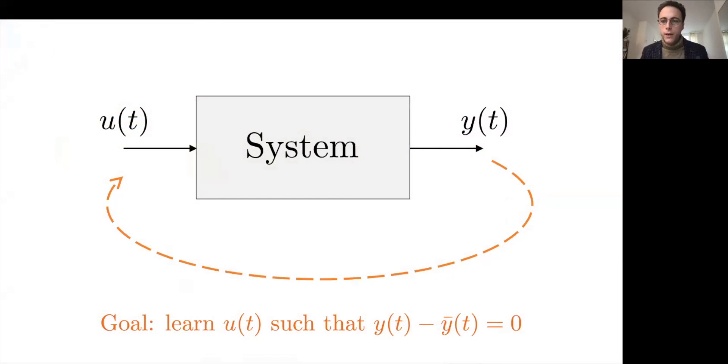So from a control point of view, what we have is our usual input-output system, and the goal is to learn a control action such that the evolution is exactly the one that we desire. This is, of course, as we all know, a quite complex problem, because we are trying to map two things that live in infinite dimensional spaces, so which are general functions.